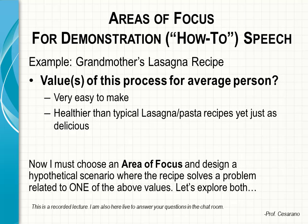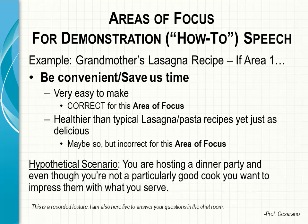Now he must choose the appropriate area of focus and design a hypothetical scenario where the recipe solves a specific problem related to only one of the above values of the lasagna recipe. Before deciding, he explores which area of focus would be appropriate for each of the two distinct values of the process. First, he considers that the lasagna recipe is very easy to make and decides that if he demonstrates the process for this reason, the process belongs under the first area of focus — saves time, is convenient — so he would design a hypothetical scenario where being able to make something easily would solve a problem.